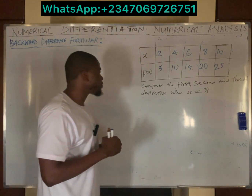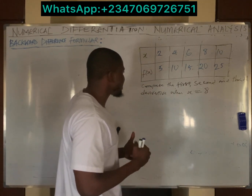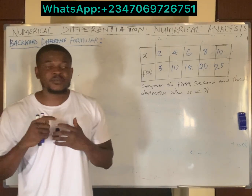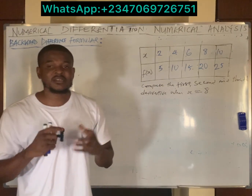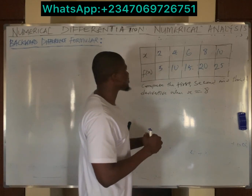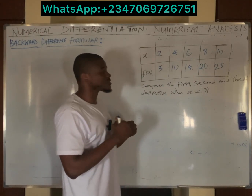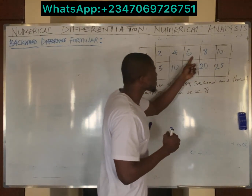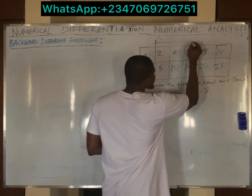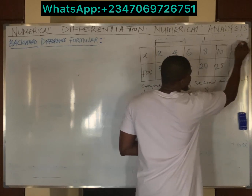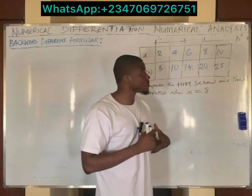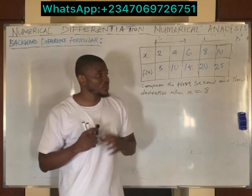The question on the board says: compute the first, second, and third derivative when x is equal to 8. As I've said in all my videos, understanding which part of the table the value falls in is key to numerical differentiation. We're told to differentiate when x equals 8. Looking at this table — excluding the x and y columns — we have five columns, which can be split into the first two, the last two, and the midpoint.